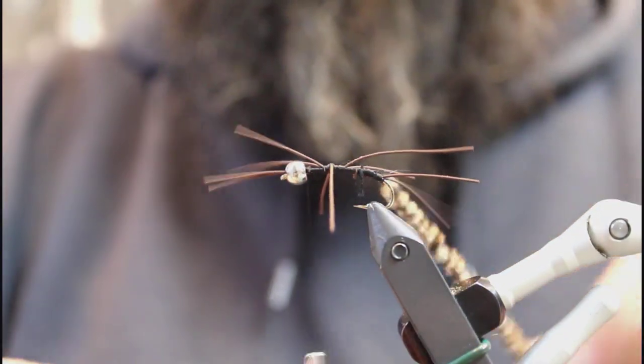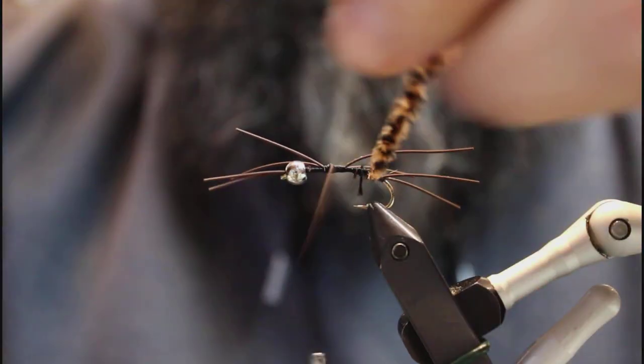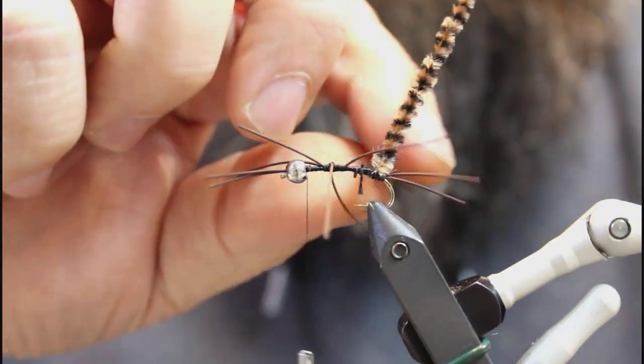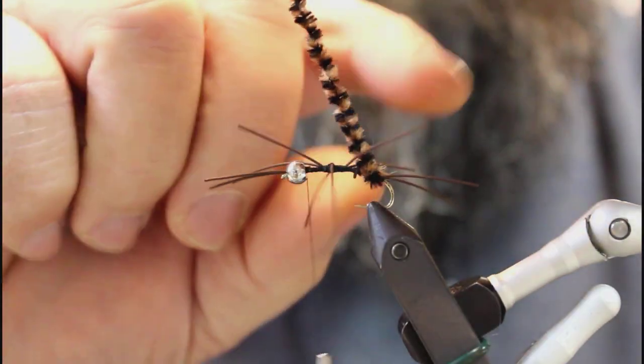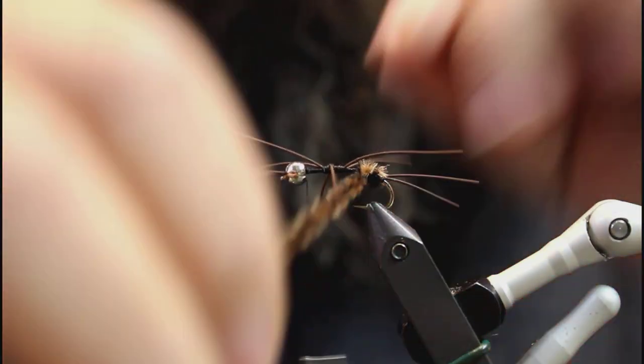I'll go ahead and bring that thread up behind the bead now. We'll start wrapping this body with the chenille here. Kind of work it through the legs here.